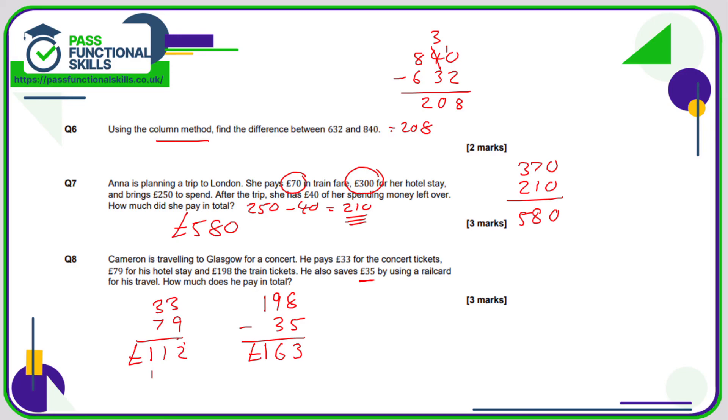So the total he spends is therefore 163 plus 112. Three plus two is five, six plus one is seven, one plus one is two. So the total is 275 pounds.